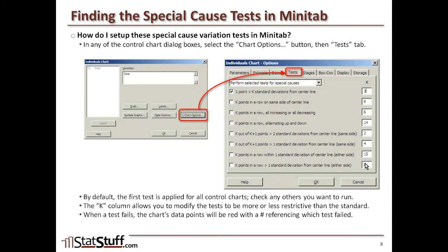When a test fails and triggers one of these conditions, the observation where the failure occurred will be shown in red. Minitab puts a number next to it indicating which test — one through eight — had failed. The Minitab session window will also display those test failures, referencing which observations triggered those particular tests.